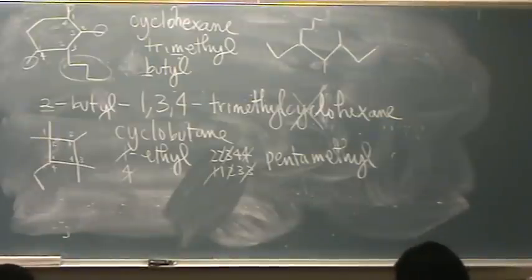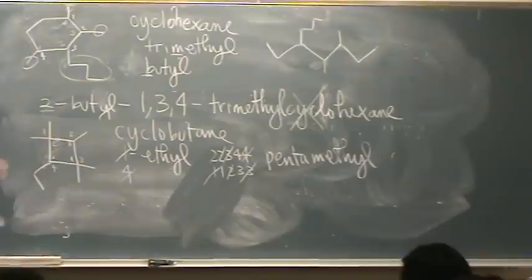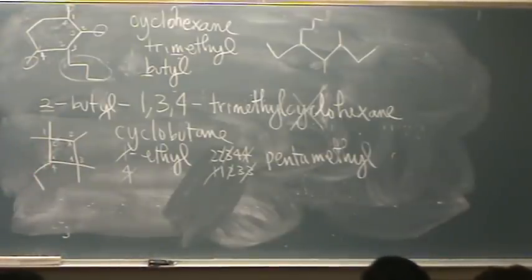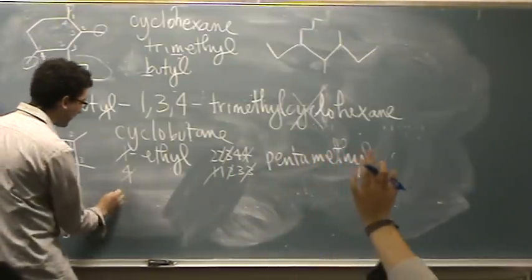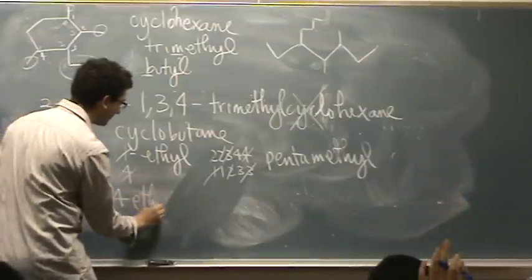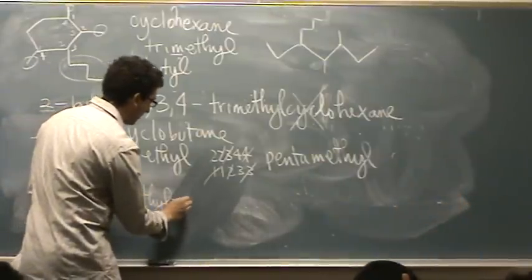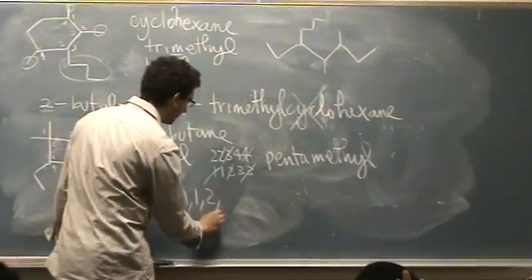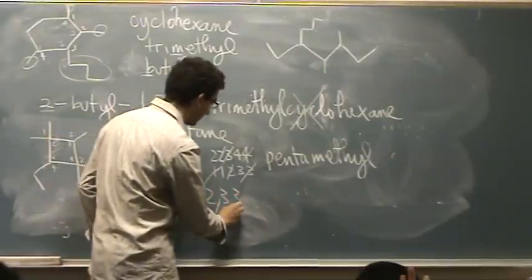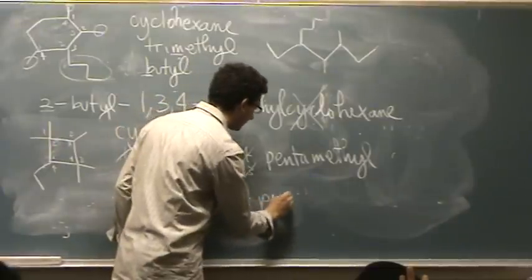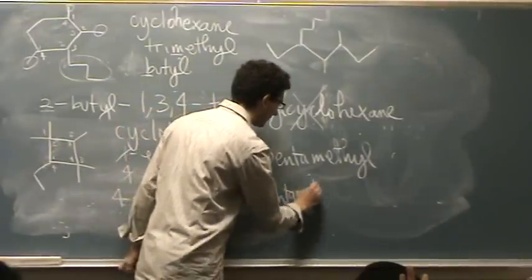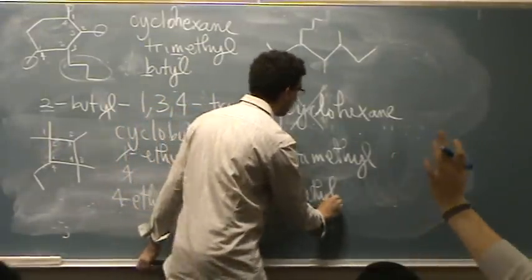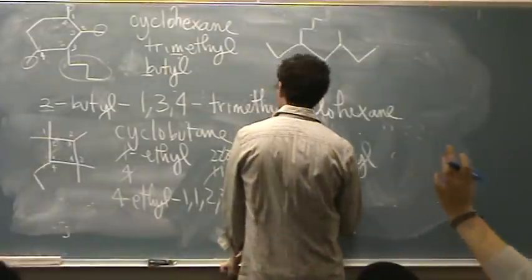In class, we had something a little different. Where we have the same set of numbers either way. So then we pick the one with the lowest number first. But in this case, we've got two totally different choices. So we'll pick 1-ethyl-1,1,2,3,3-pentamethyl-cyclobutane.